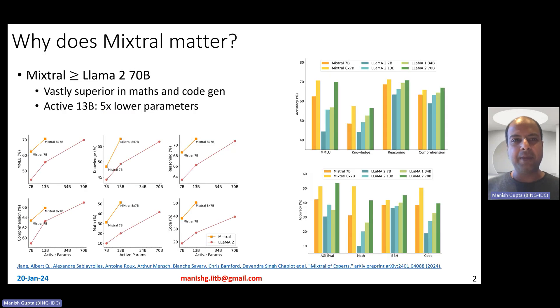Why does Mixtral matter? It matters because Mixtral outperforms Llama 2 70 billion-sized model across a large number of benchmarks like MMLU, knowledge-based benchmarks, reasoning-based benchmarks, comprehension benchmarks, AGI Eval, Math, BigBench hard and coding benchmarks.